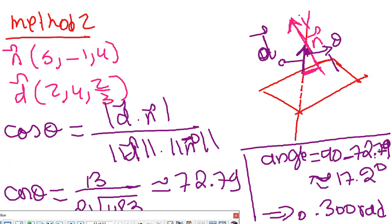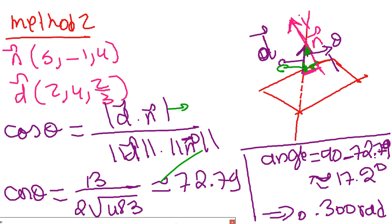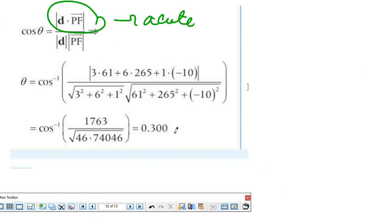Method 2 is faster and easier, but you need to be careful — it gives the complementary angle. I have the normal and the vector director. When I do the dot product of those two vectors, the angle I get is between the normal and the line direction. But the angle I actually need is between the line and the plane, which is the complement of that. So after doing the dot product and taking the absolute value, I get θ = 72.7°. The real angle between the line and the plane is 90° − 72.79° = 17.2°, which is 0.300 radians. This matches the result from method 1.